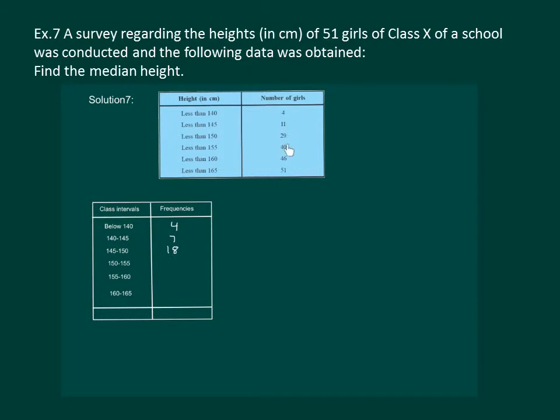40 minus 29 is 11, 46 minus 40 is 6, and 51 minus 46 gives us 5. We can check that sum of the frequency should be 51 as total number of girls are 51.